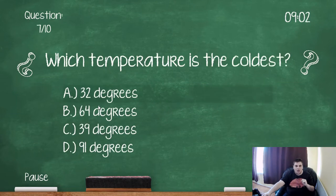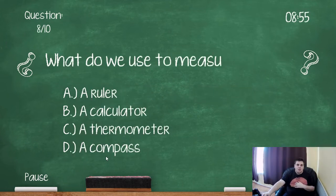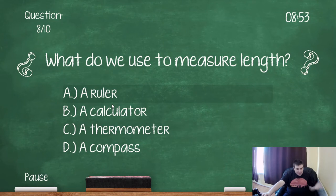Which temperature is the coldest? Ah, this is Fahrenheit. But it doesn't matter, it's still on a sliding scale isn't it? So, 32 degrees. What do we use to measure length? That is a ruler this time.